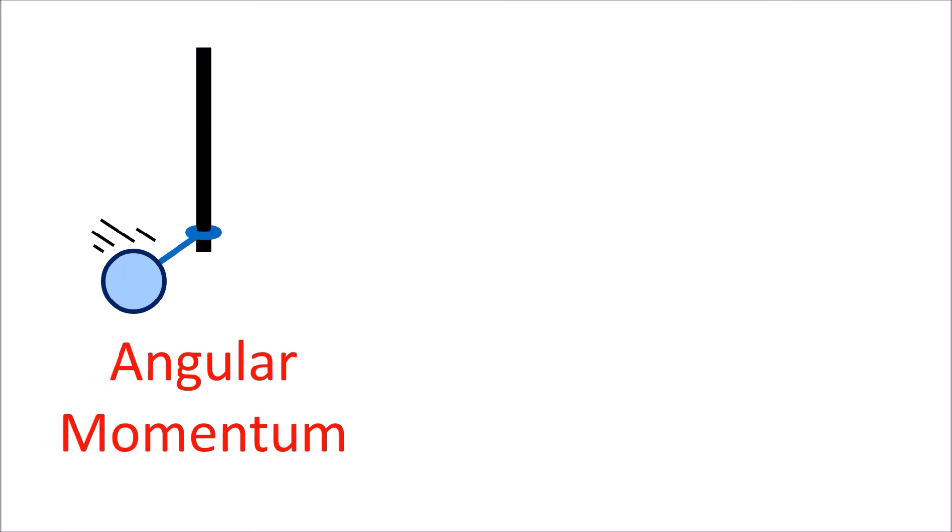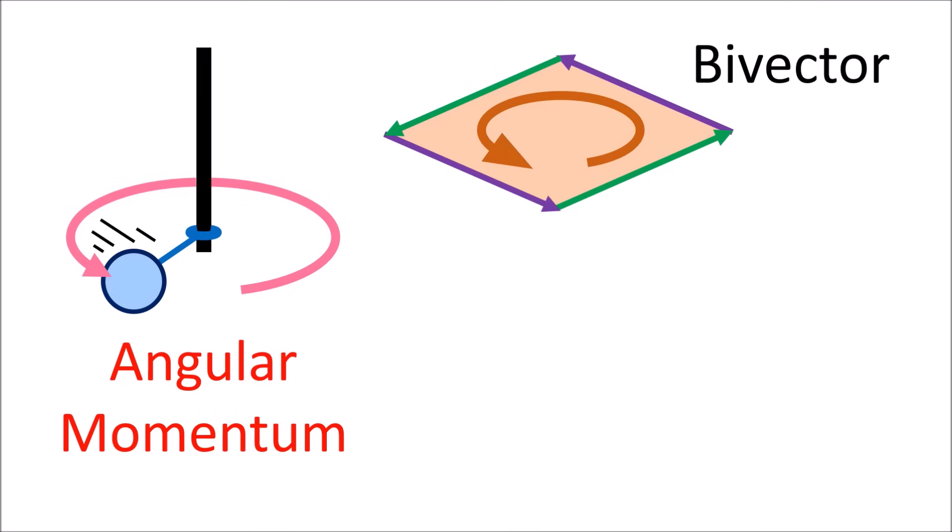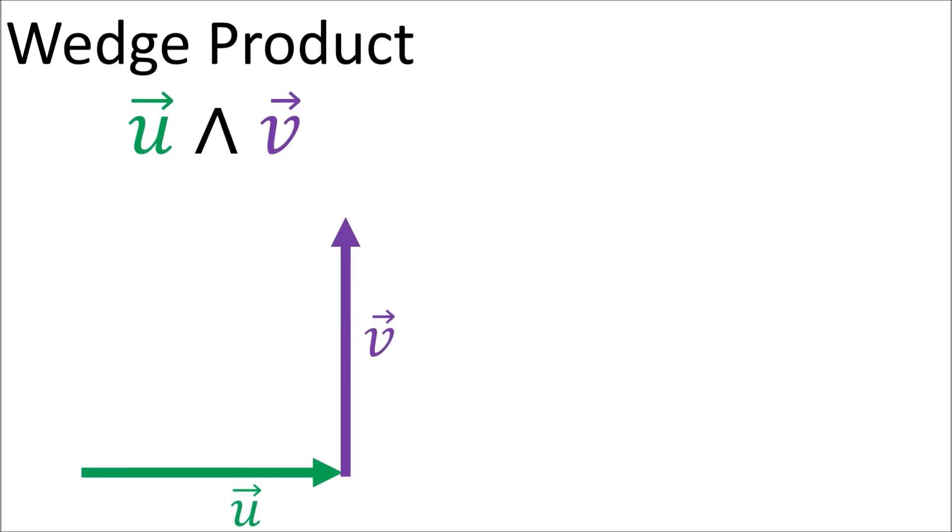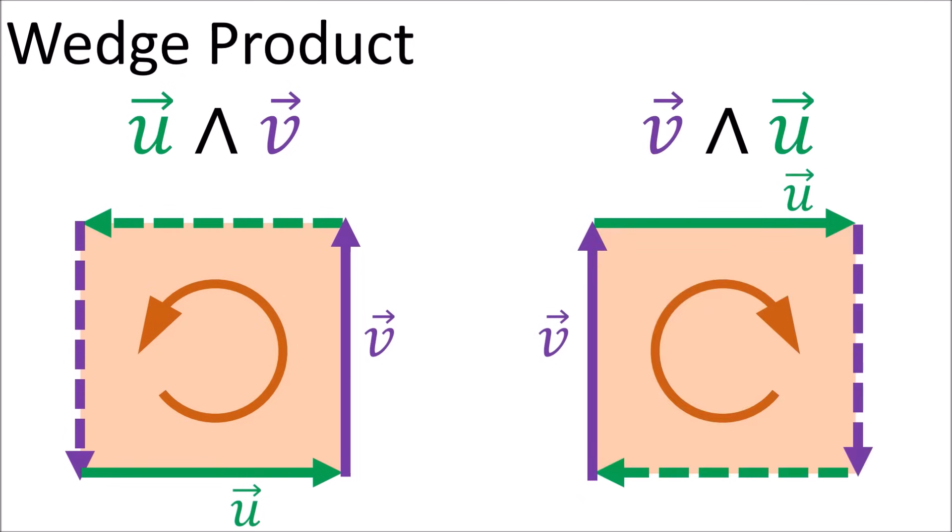For example, it's much more natural to represent angular momentum using a bivector, which is an oriented plane, instead of using a vector, which requires the awkward right-hand rule to make sense of. We can build these bivectors using the wedge product. The wedge product of vectors u and v is a plane formed by the vectors u and v with an orientation that follows the arrows. If we swap the order of the vectors, we get the same plane, but with the opposite orientation.